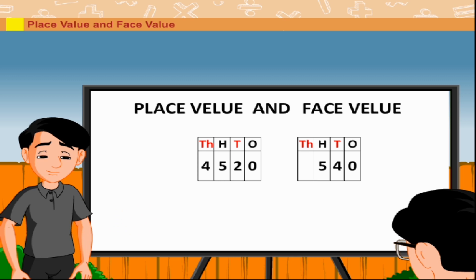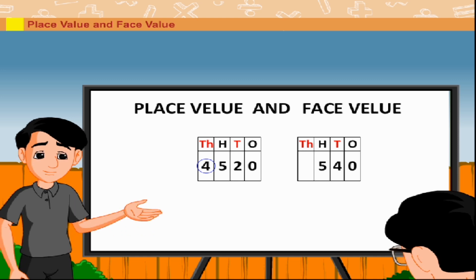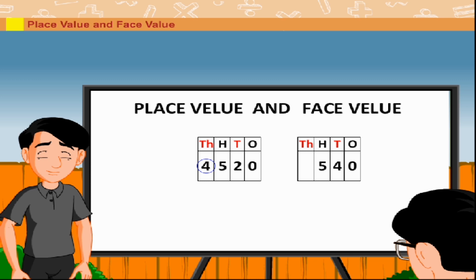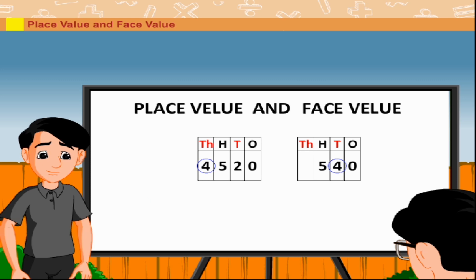For example, the digit 4 is at the thousandth place in the number 4520 whereas it is at the tenth place in the number 540. Hence,